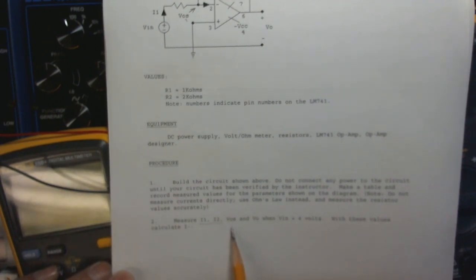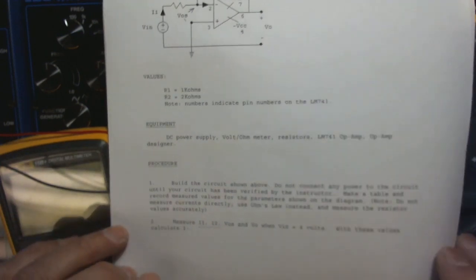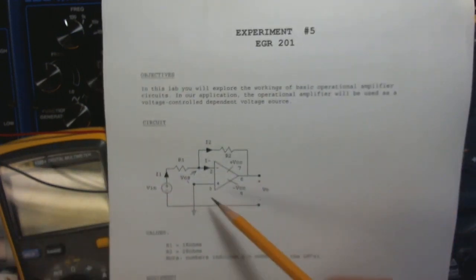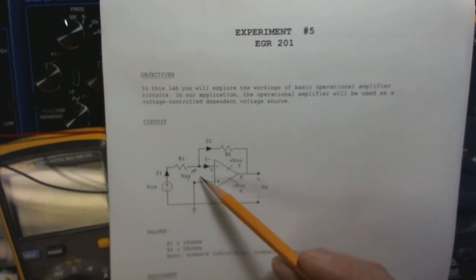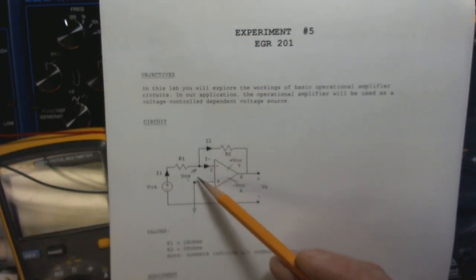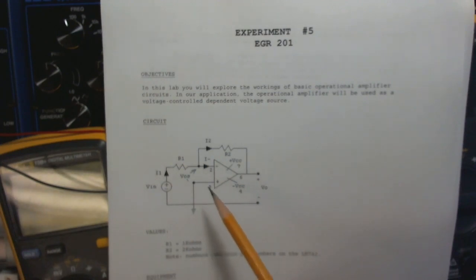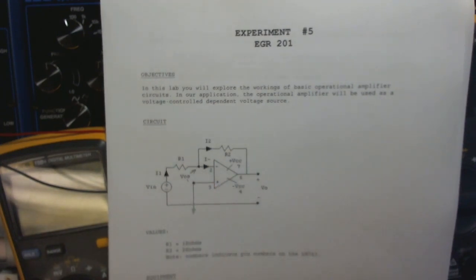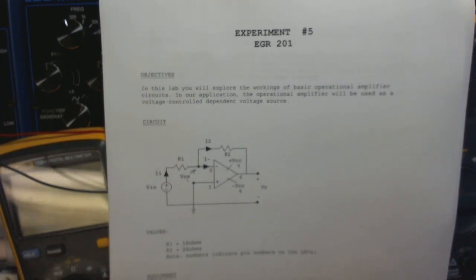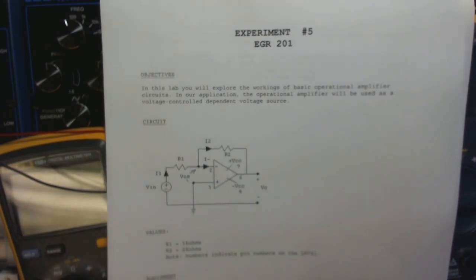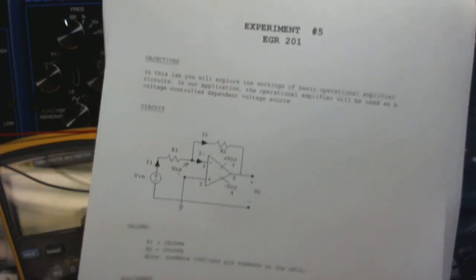I'm also going to measure VOS, V_out, and V_in. VOS is the difference between the negative terminal and the positive terminal. Remember that in our work we said that V+ equals V−, so we expect VOS to be a small value. We'll see if we can verify that. That's procedure number two.